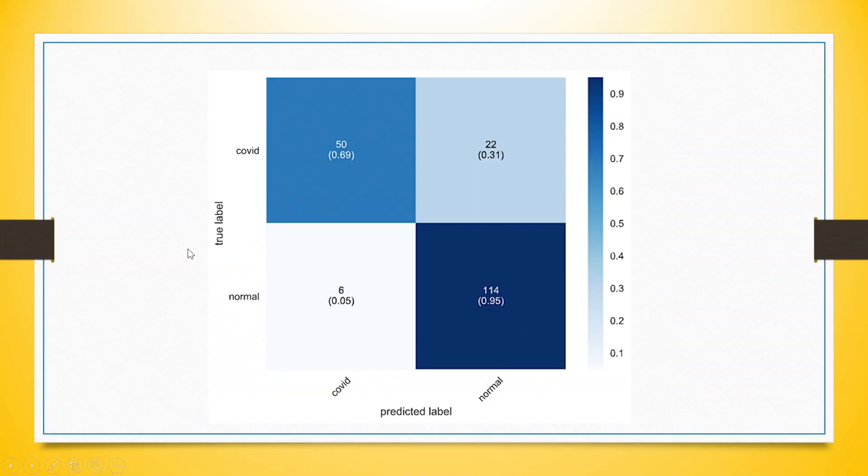After carrying out the algorithm, it is necessary that we check the accuracy of the model. For this, we are generating the confusion matrix.